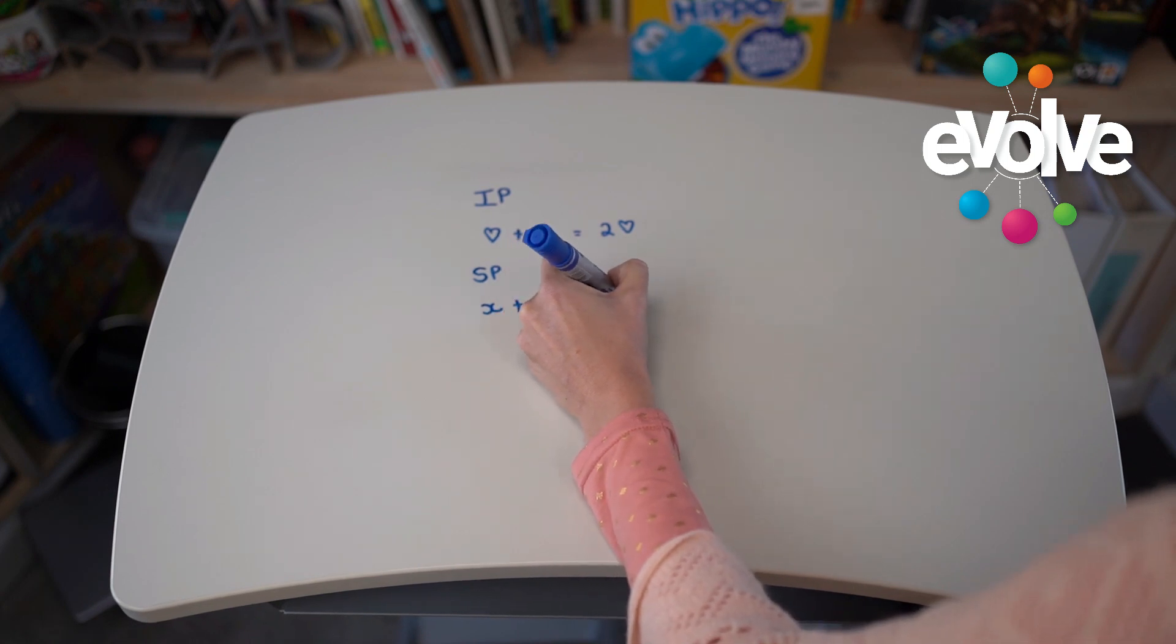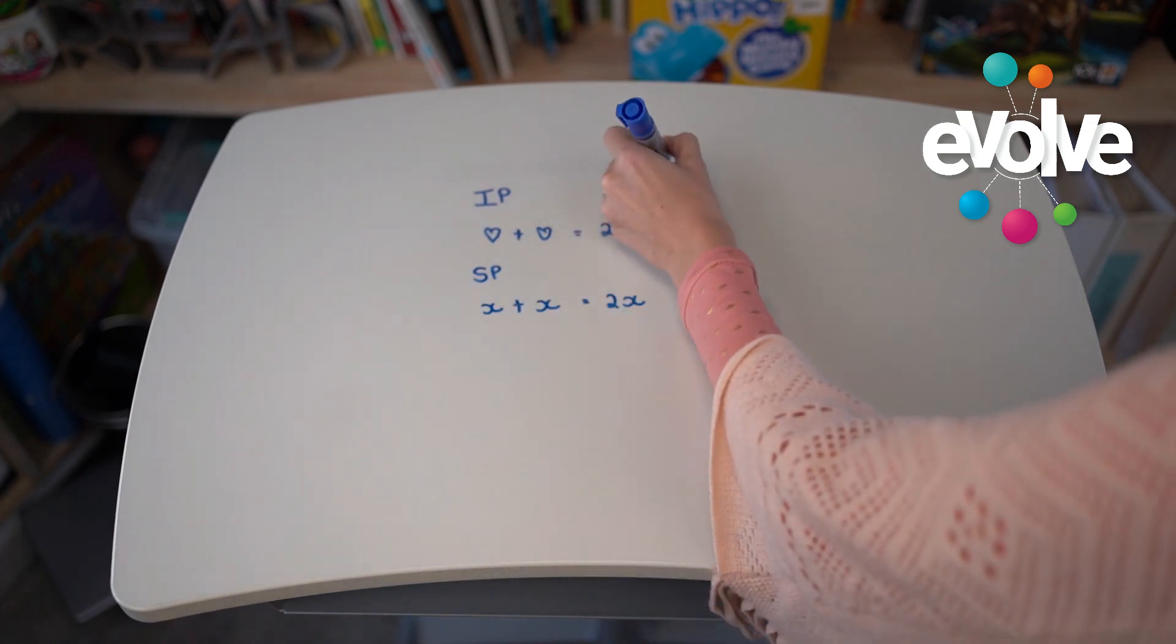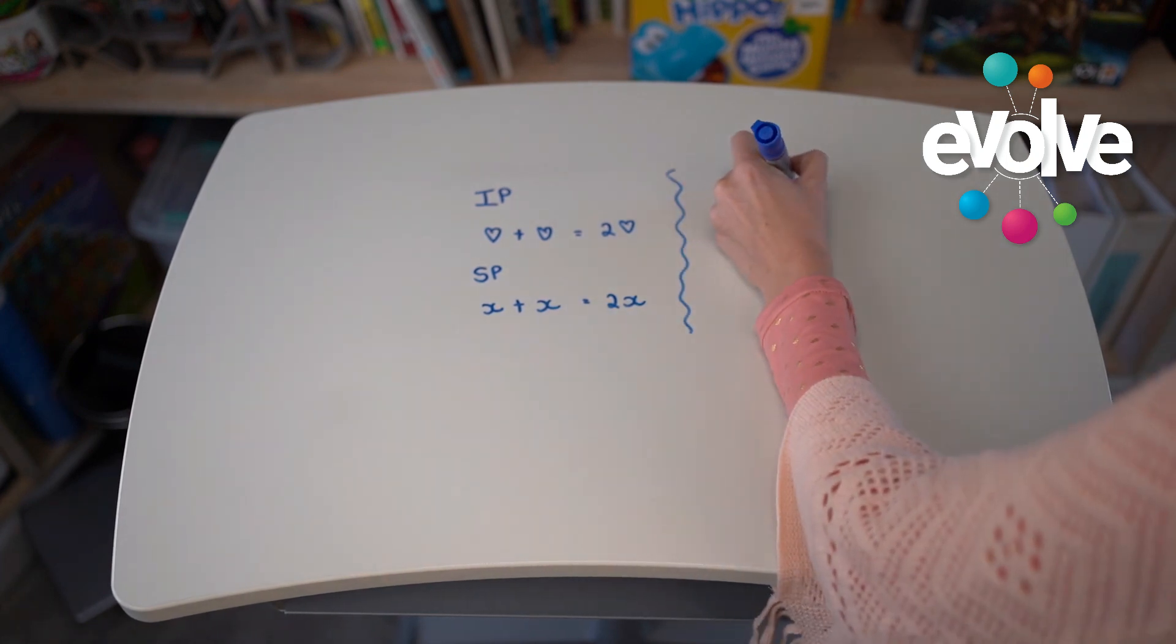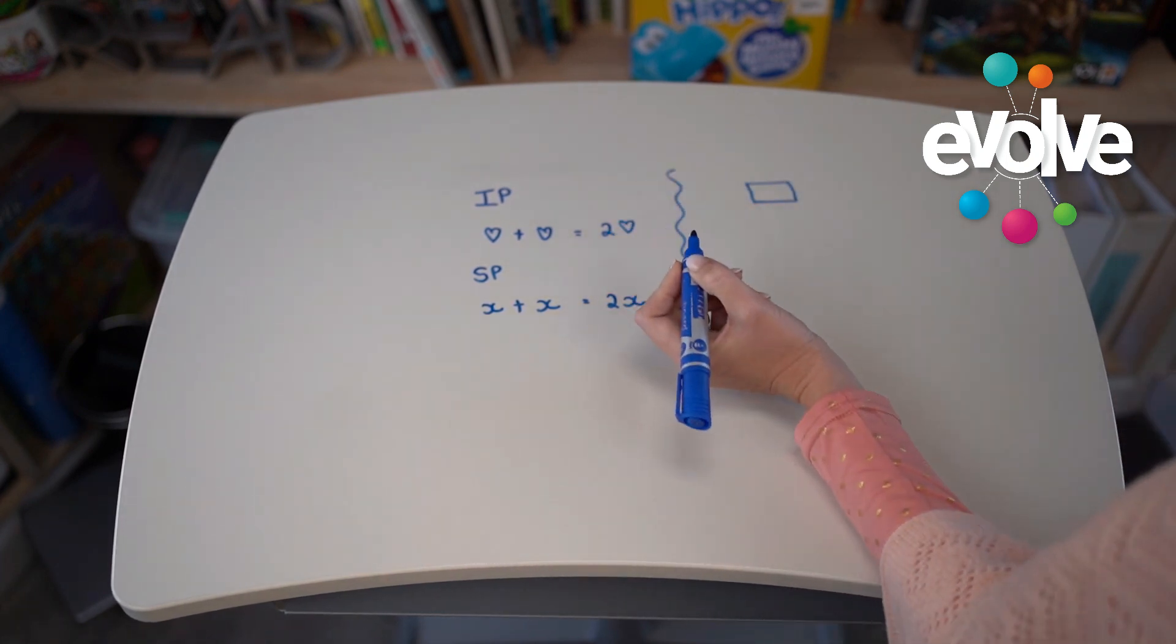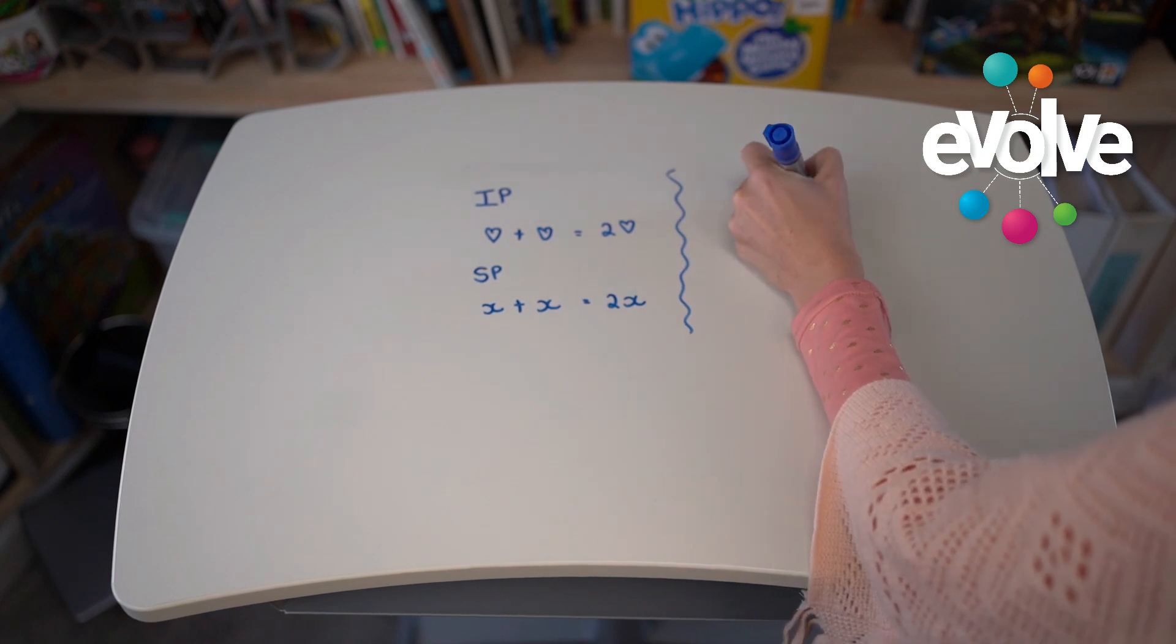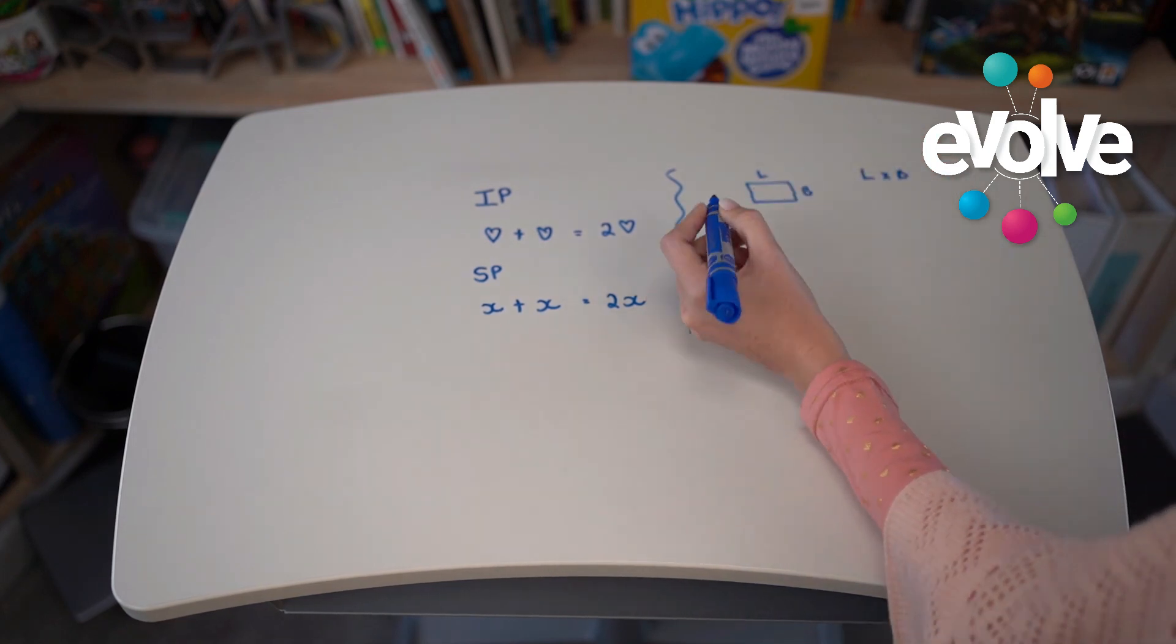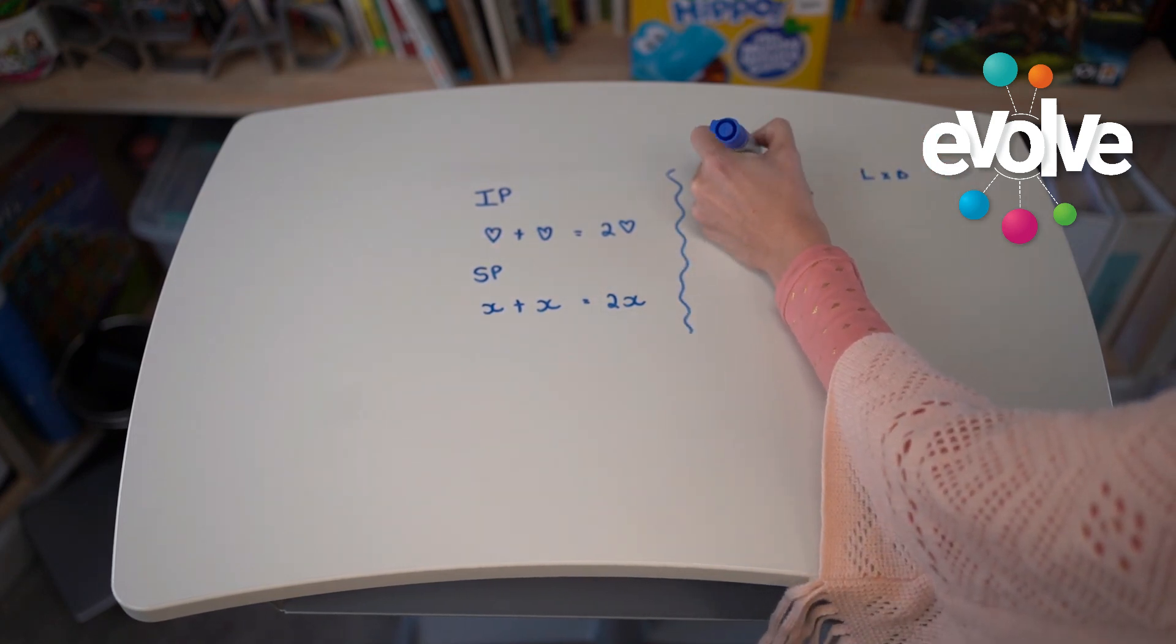...equals 2x. Okay, then when we look at area of a shape and we want to say length times breadth, length times breadth for area of a shape, and let's put in a value here and say this is...